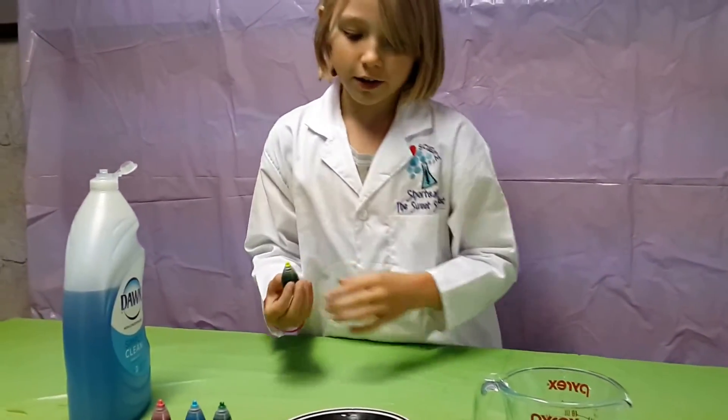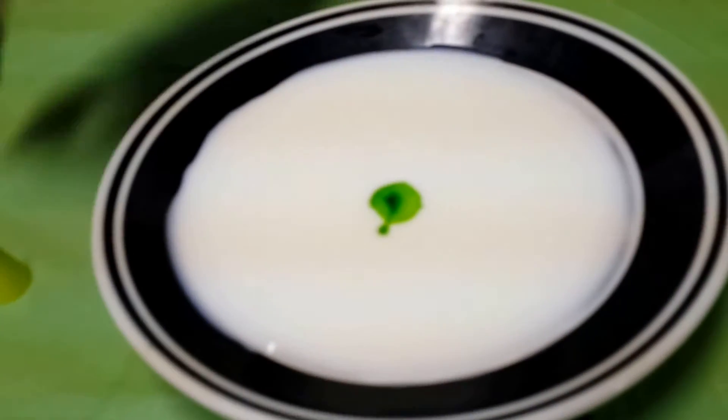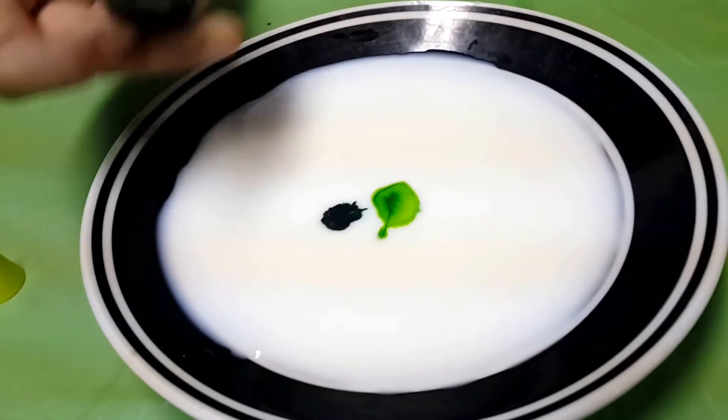Now, take the food coloring and you kind of put it in the middle. Kind of touching, kind of not.